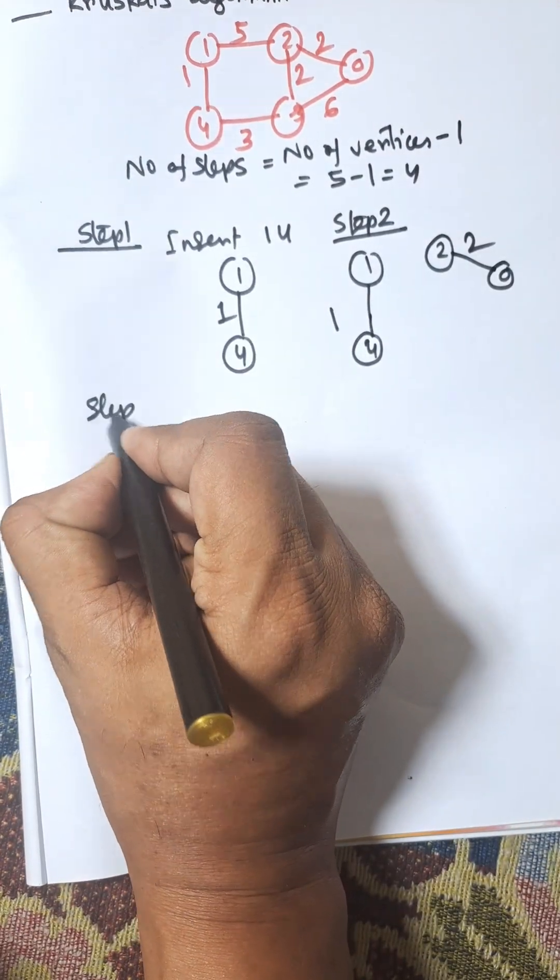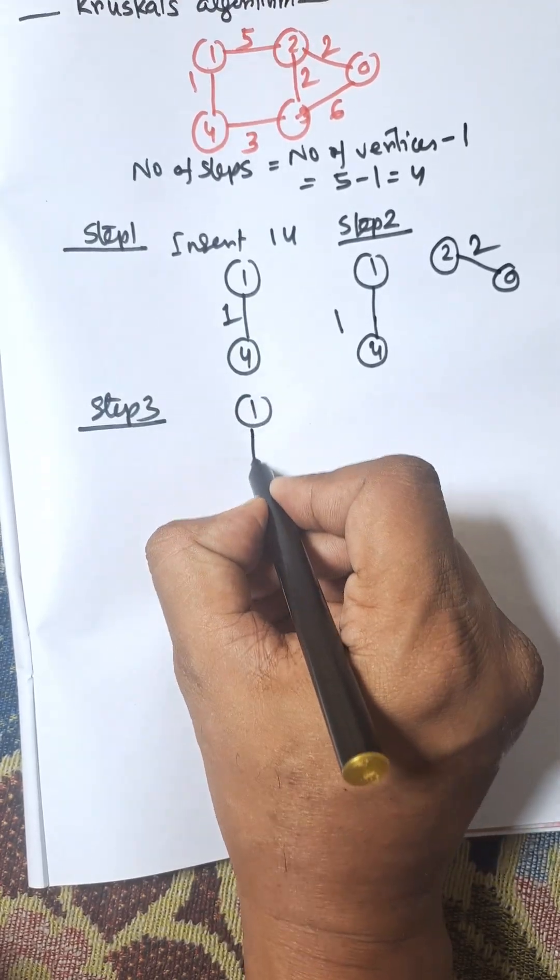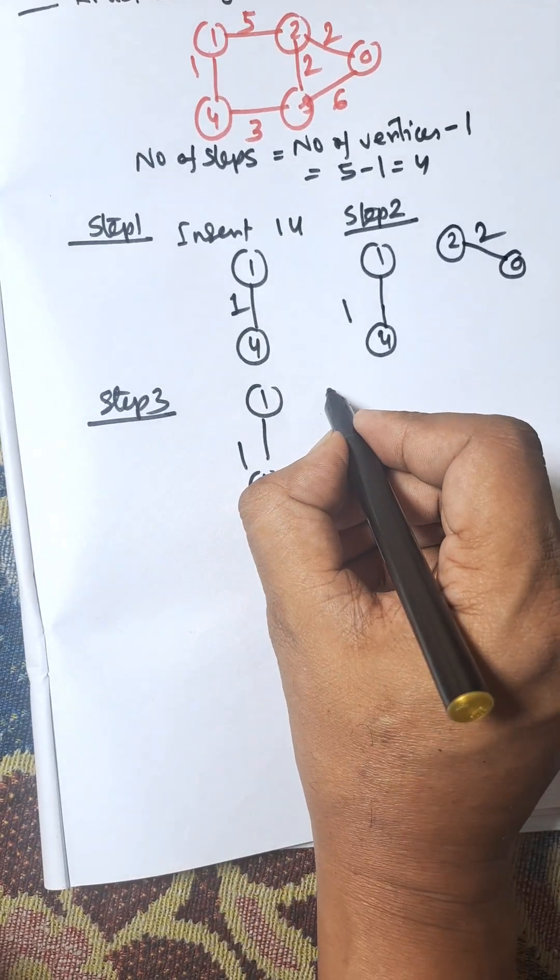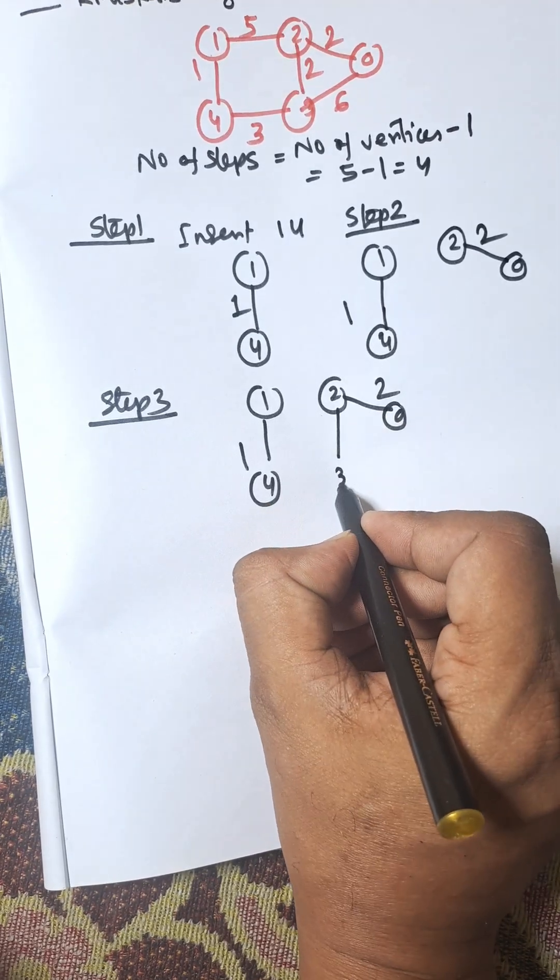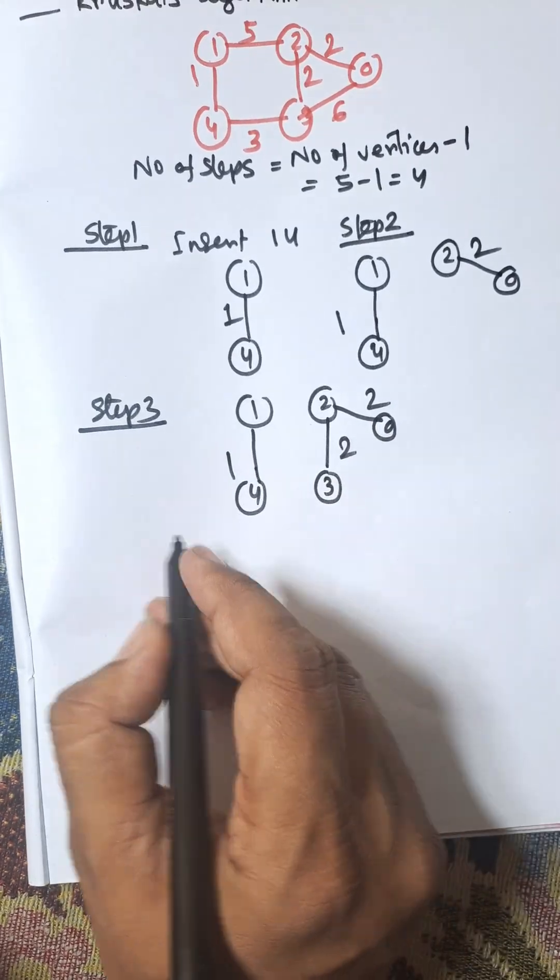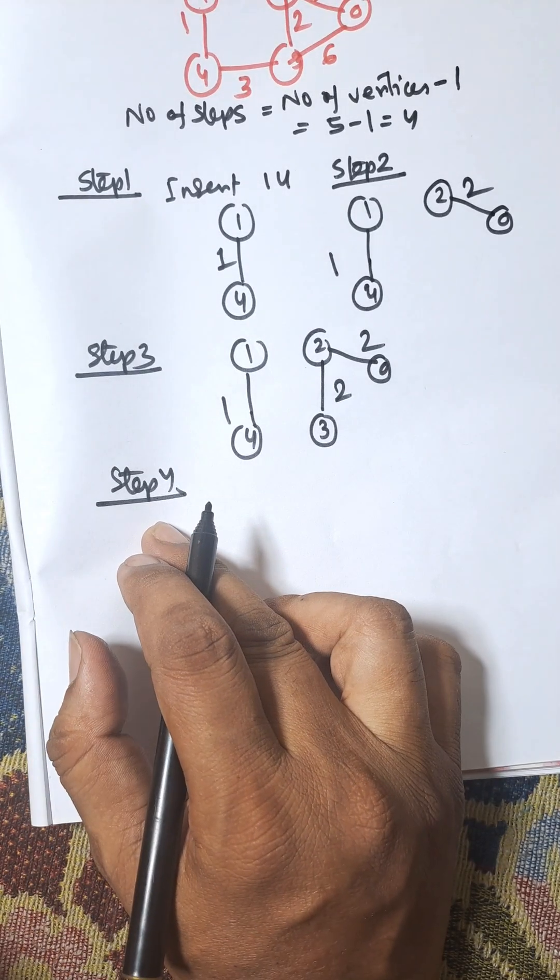Step 3: The next minimum cost is edge 2-3. So far we have 1-4 with cost 1, 2-0 with cost 2, and now 2-3 with cost 2. In Step 4, the final step, we need to select the next minimum cost, which is 3.